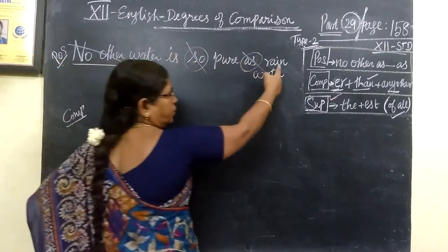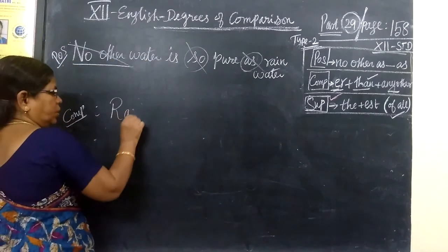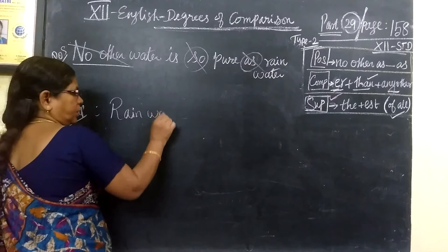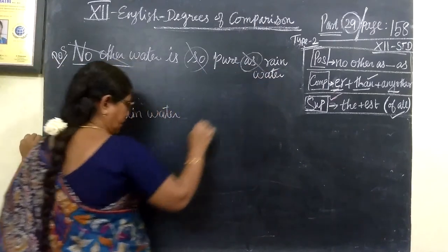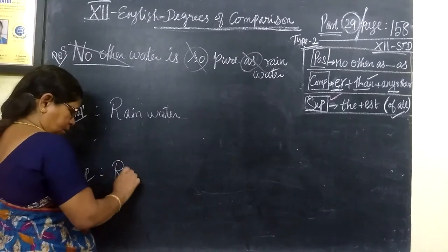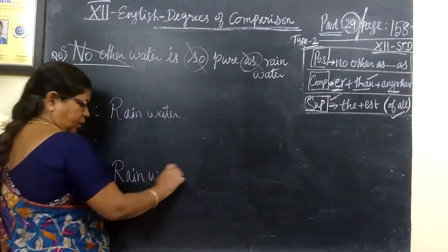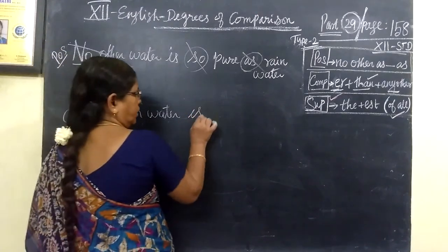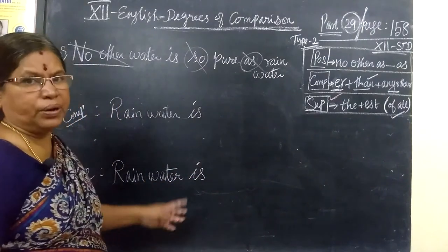Rain water in this topic. Immediately you are writing the verb 'is' here. This is the most important. If you write it, you can begin. So rainwater is. Now comparative.